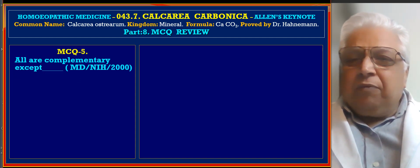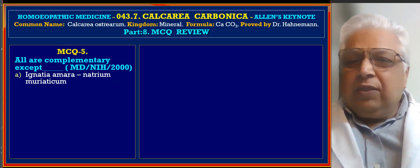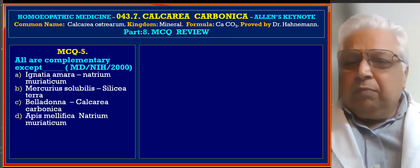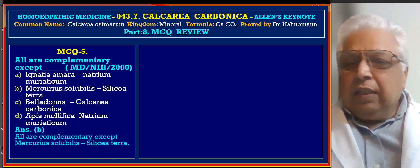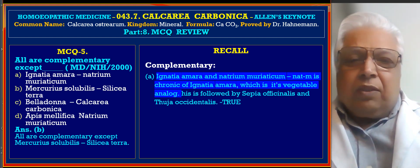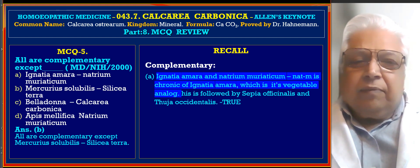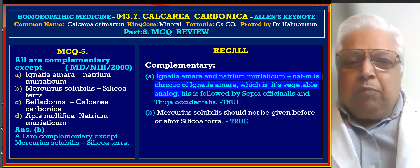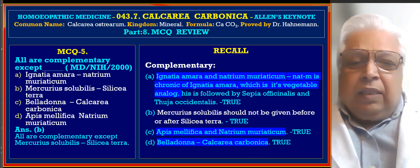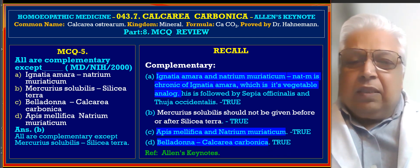MCQ 5: All are complementary except — A. Ignatia Amara and Natrum Muriaticum, B. Mercurius Solubilis and Silicea Terra, C. Belladonna and Calcarea Carb, D. Apis Mellifica and Natrum Muriaticum. Answer is B. Mercurius Solubilis should not be given before and after Silicea — that is incompatible, not complementary. The other pairs are all complementary. Reference from Allen's Keynote.